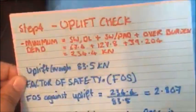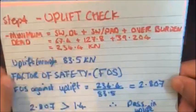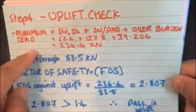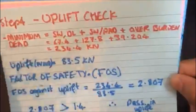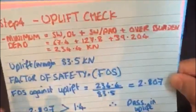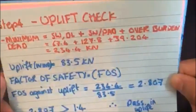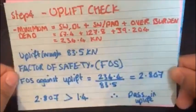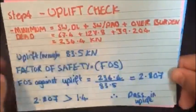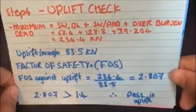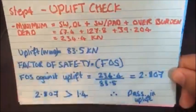Right, step 4, the uplift check. So to calculate the uplift check, you need to figure out the minimum dead load. The minimum dead load is the self weight, slash the dead load, so essentially the dead load of the self weight of the rafters and the purlins plus the self weight of the pad, which we just worked out before, plus the overburden, which again we just worked out before. So once we've got our minimum dead, we got a total of 234.4 kilonewtons.